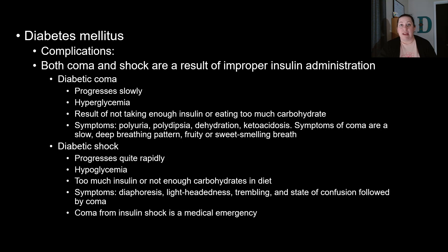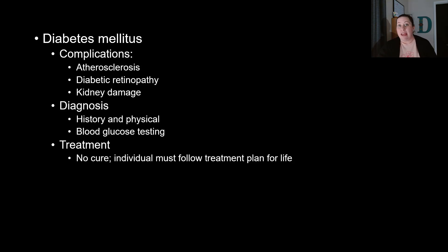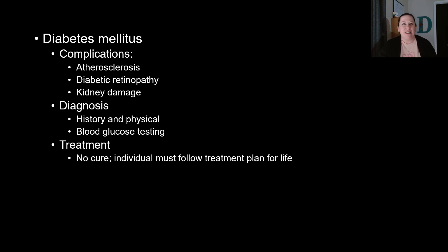Another complication can be arteriosclerosis — a clogging up of the arteries. Diabetic retinopathy is another, where the retina of the eye is affected, causing blindness. There could also be kidney damage. These three are the long-term effects of uncontrolled diabetes. If a patient works hard to control their diabetes, these three complications could potentially be avoided or at least slowed down significantly.